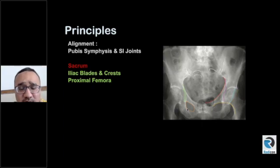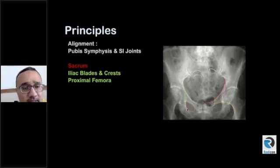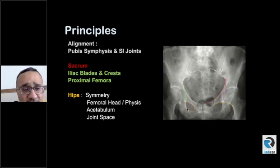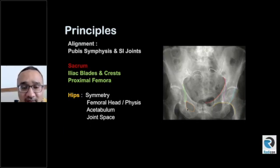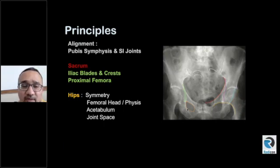Don't forget the proximal femora — they're also part of the film. Obviously, we always look at the hips first. In the hips, compare the symmetry of the joint spaces and the contour of the femoral heads. In skeletally immature patients, always look at the physis for any abnormality such as a slip or overlap. Don't forget the acetabulum, as things can hide there too. For joint spaces, always compare one side with the other and see whether it is a focal joint space loss affecting the superior aspect of the joint, or whether it is concentric or diffuse joint space loss.